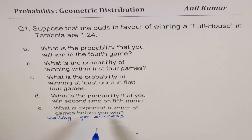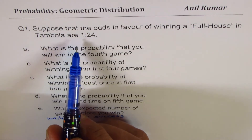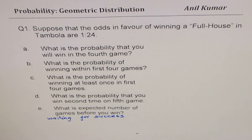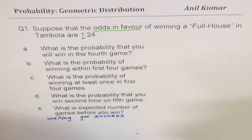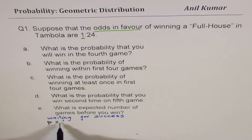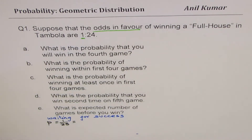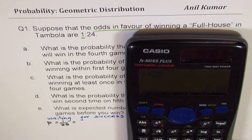I expect that by now you know Bernoulli's principle, mutually exclusive events, and independent events — those basics are clear, and I'm moving forward with that assumption. In this particular case, when we say odds in favor of 1 to 24, that means one is in favor and 24 are not in favor. So success, which we write as P, is 1 out of 25. You should not make the mistake of dividing by 24.